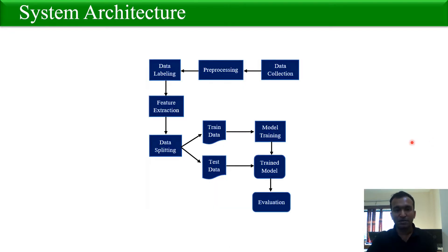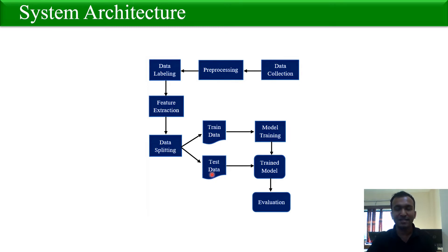System Architecture: At first we collected the data from an authentic source, then we did pre-processing, then we labeled the data, then we did feature extraction, and then we split the data into two parts — train data and test data. We trained the model using the training dataset, tested it using the test data, and finally evaluated the model.